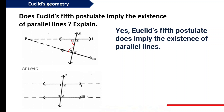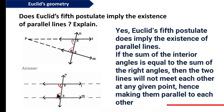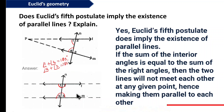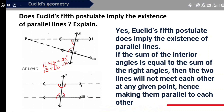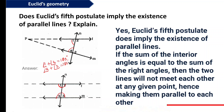Yes, Euclid's Fifth Postulate does imply the existence of parallel lines. If the sum of the interior angles equals 180 degrees — meaning angle 1 and angle 4 add up to 180 degrees, and angle 2 and angle 3 also add up to 180 degrees — then the lines will not meet each other at any point, hence making them parallel to each other.